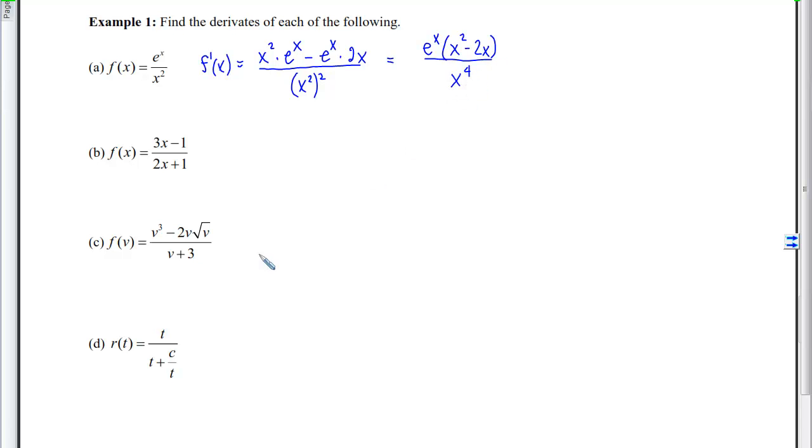If we look at Part B now, if we take the Derivative, we will have Low D High minus High D Low over Low Squared. We could simplify that if we wished. We'd get 6x plus 3 minus 6x plus 2. We can see that those 6x's will cancel and we'll be left with 1 over (2x + 1) quantity squared.